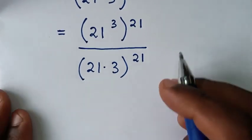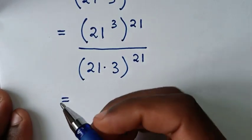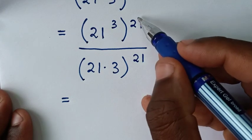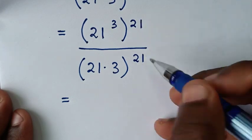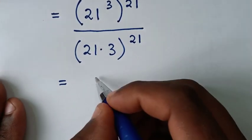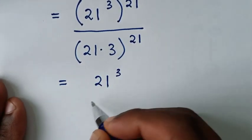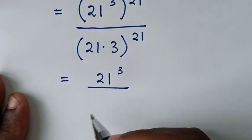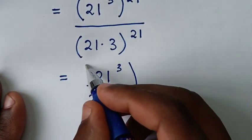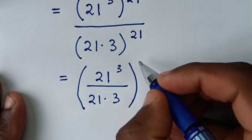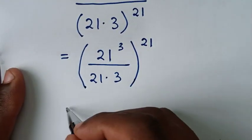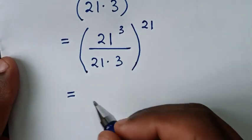Using the division of exponents, since both the numerator and denominator have the same power of 21 outside the bracket, those cancel. We are left with 21 power of 3 over 21 times 3, all raised to the same power of 21.